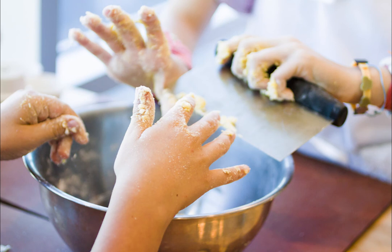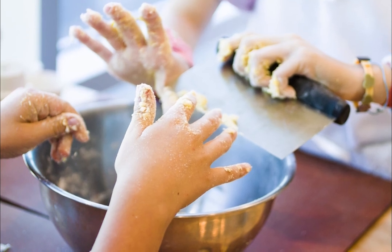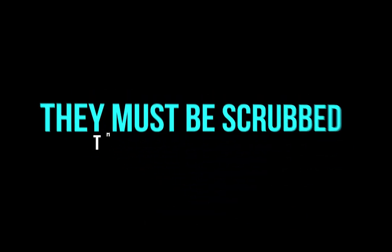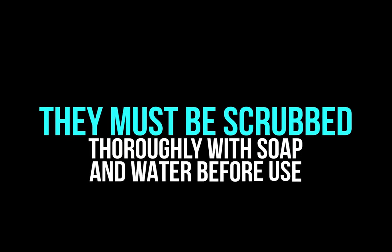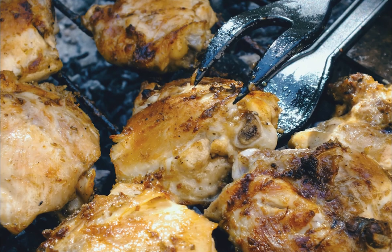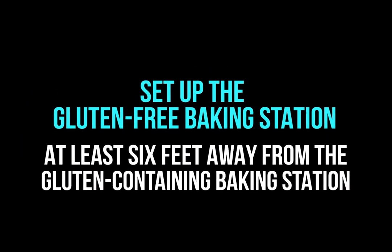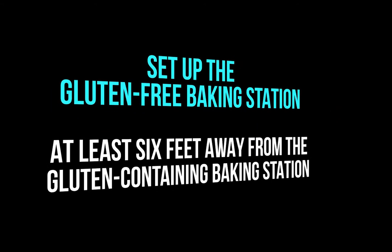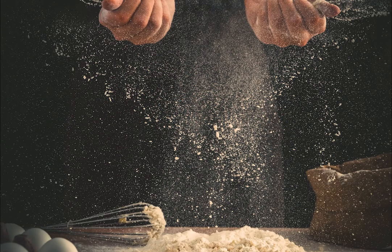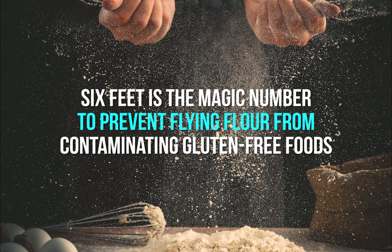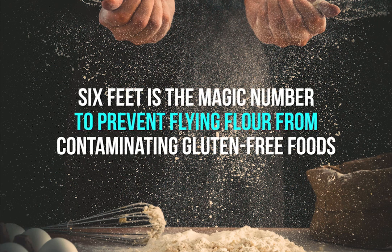Shared pots, pans, cutting boards, and utensils can be safely used by students with celiac disease, but they must be scrubbed thoroughly with soap and water before use. Please use the same level of cleaning that you would use to clean kitchen utensils that have touched raw chicken — the same level of diligence will remove gluten. If you're baking, set up the gluten-free baking station at least six feet away from a gluten-containing baking station. A study in the UK found that six feet is the magic number to prevent flying flour from contaminating gluten-free foods — six feet to prevent COVID-19 and six feet to prevent flying flour too.